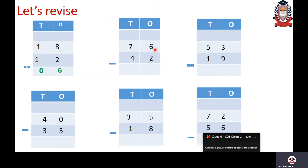Next: 76 minus 42. More on top or more on bottom? More on top, so no regrouping needed. 6 minus 2 gives 4. Moving to tens column: 7 minus 4. 7 fingers minus 4 fingers gives 3. So 76 minus 42 equals 34.